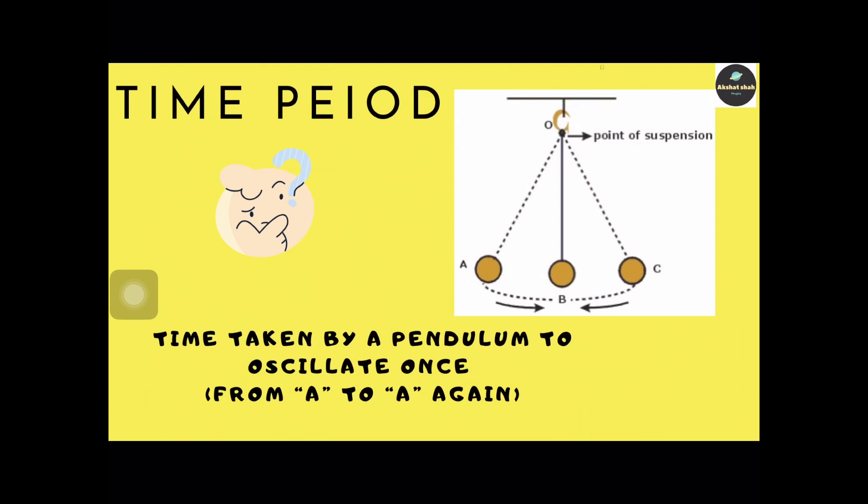An oscillation is a complete to-and-fro motion, like here from A to A again, or from B to B, or from C to C.